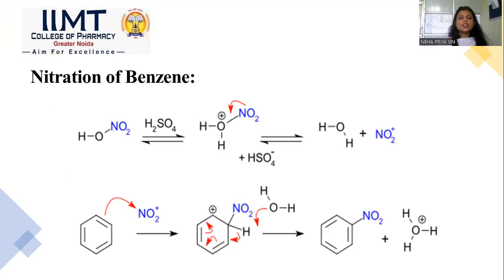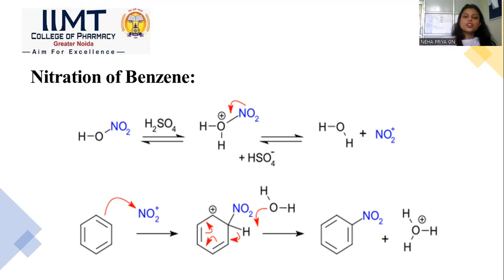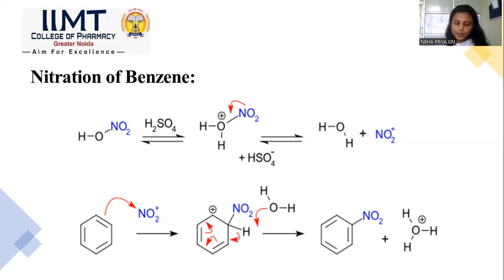In this process, the first step is generation of the electrophile. When HNO3 is reacted in the presence of H2SO4, electrophilic aromatic substitution takes place. The electrophile — the nitronium ion NO2+ — is generated and then reacts with benzene. For example, the nitration of benzene is carried out in this manner.